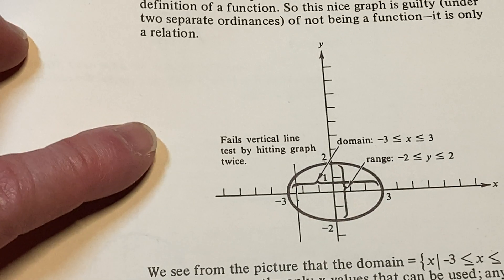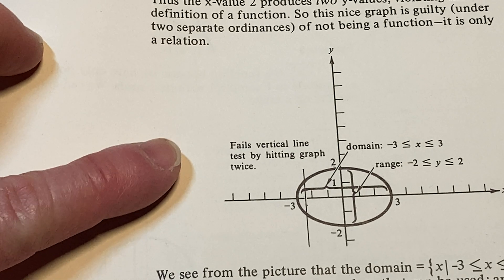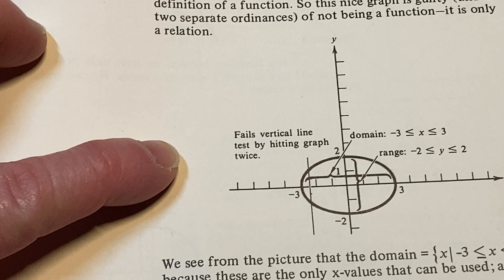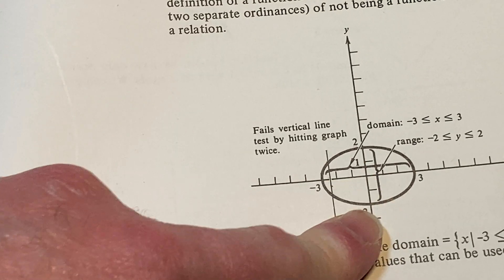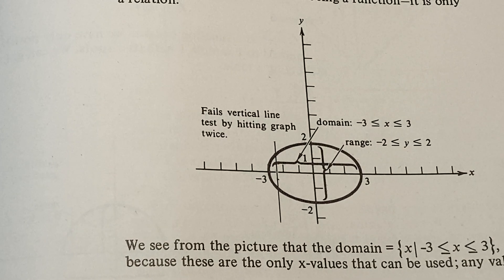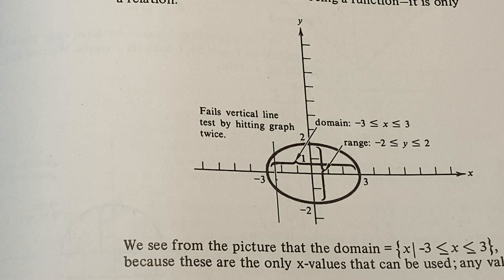Yeah. So it's not a function, right? Because it fails the vertical line test because it hits the graph twice. And they show you the range. They show you a good job of doing that. That's what's really good work on their part, right? Because think about it.